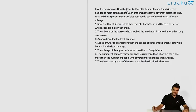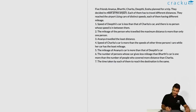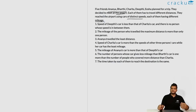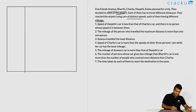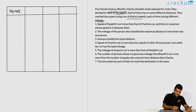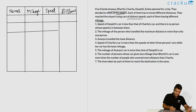In this question we are told there are 5 friends: Ananya, Bharati, Charitra, Deepti, and Isha — let's call them A, B, C, D, and E. They have gone for a trip and decided to meet at the airport, but all of them travel different distances using cars with distinct speeds and different mileages. We need to determine the order of speeds, distances, and mileages. Let us draw a table with the names as rows and mileage, speed, and distance as columns.